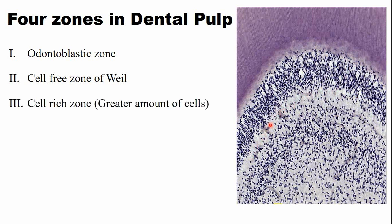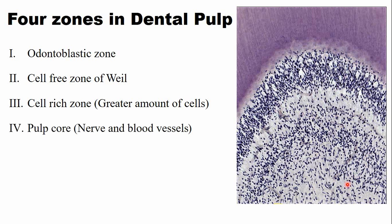The next zone is the cell-rich zone. Just below the cell-free zone there is a cell-rich zone. As the name implies, it contains a greater amount of cells. The central portion is the pulp core, which is the last zone. This pulp core contains fewer cells compared to the cell-rich zone, but it contains nerves and blood vessels.